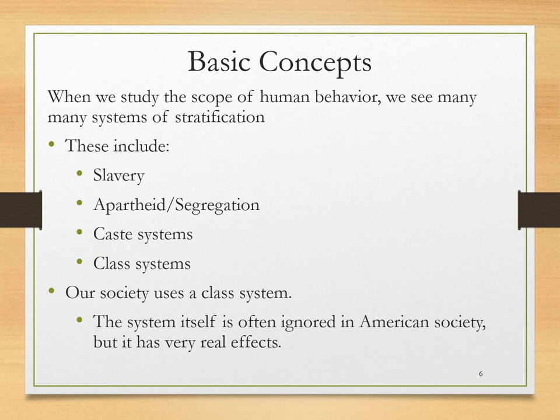When we study the scope of human behavior, we see that there are actually many systems of stratification. These include slavery, in which human beings are actually owned by other human beings; apartheid or segregation, in which certain portions of the population are prohibited from certain facilities or territories; caste systems, such as the infamous Indian caste system, which was outlawed in the 1940s; and the American class system, which is often ignored by many Americans, even though it has very real effects.